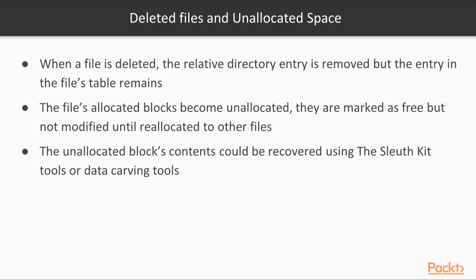Indeed, when a file is deleted, the relative directory entry is removed, but the master file table entry on Windows and the inode on Linux still remain. Also, its allocated blocks remain intact but are marked as free, which means they are not in use and can be allocated to another file. These blocks are part of the so-called unallocated space.